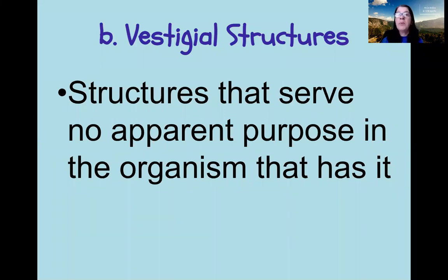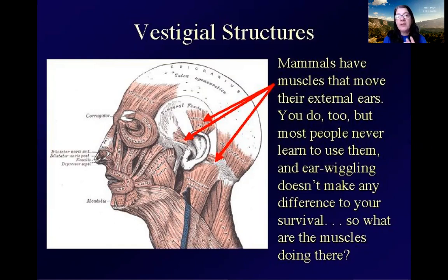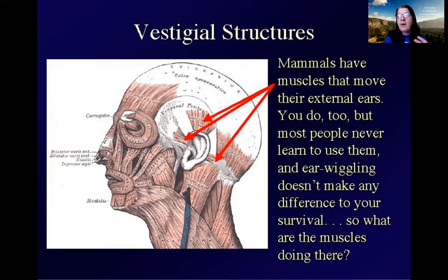Vestigial structures are another anatomical piece of evidence supporting that we're all descended from a common ancestor. Vestigial structures are structures that we still have but serve no apparent purpose in the organism that has them. For example, males have muscles that can move their external ears, but most people never learn to use them and ear-wiggling doesn't really make any difference to our survival. They remain because we inherited them from a common ancestor with mammals for which ear movement was an adaptation. They haven't disappeared because even though they don't confer any advantage, they also don't confer any disadvantage.